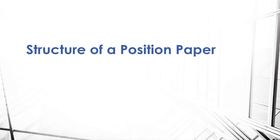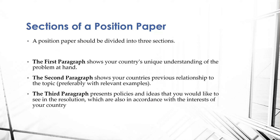We're going to learn the structure of a position paper and how to write it to really get the most out of it and achieve its goal. A good position paper divides into three sections, each roughly a paragraph. Sometimes you can add a fourth paragraph when extra information is needed. The first paragraph shows your country's unique understanding of the problem. The second paragraph shows your country's previous relationship to the topic, preferably with examples. The third paragraph presents the policies and ideas you'd like to see in the resolution, in accordance with your country's interests.